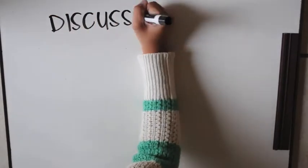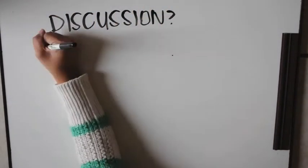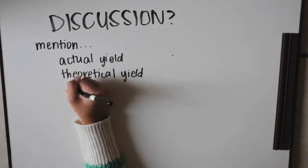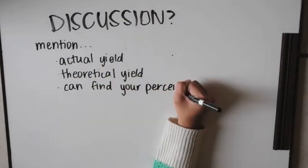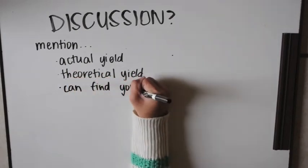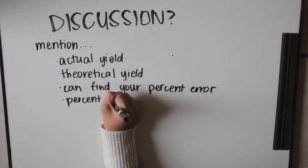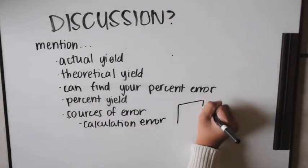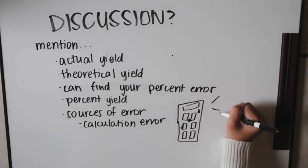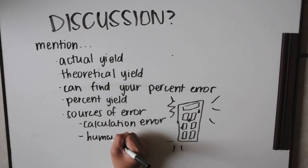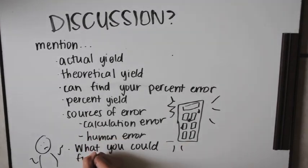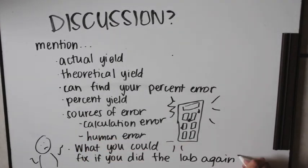For the discussion section, you could mention your actual yield, theoretical yield, percent yield, and percent error — how close you were to perfect conditions. You should discuss sources of error, such as calculation errors or human error. Finally, if you were to redo this lab, what would you fix? Thank you for watching.